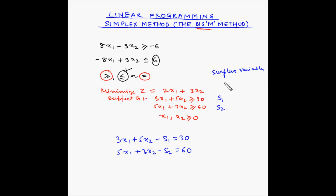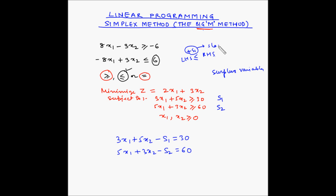In contrast, when constraints have a less than or equal to sign, we add slack variables to make the left-hand side equal to the right-hand side. There, s1 and s2 are known as slack variables because they represent the unutilized capacity.